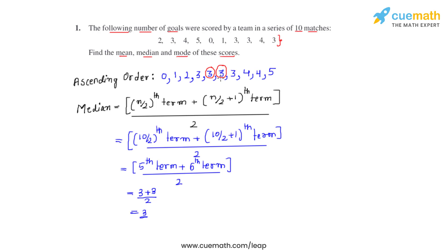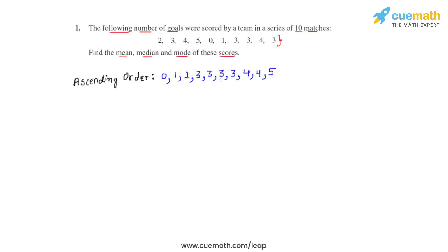Now let's find the mode. The mode for any given set of data is the observation that occurs the most, or the maximum number of times. In this case, 3 is the observation occurring the most — it occurs 4 times. So the mode for these scores is 3.